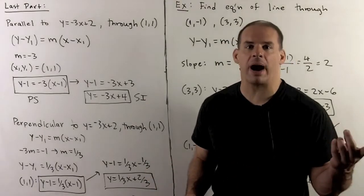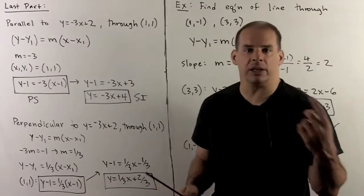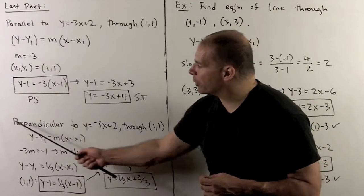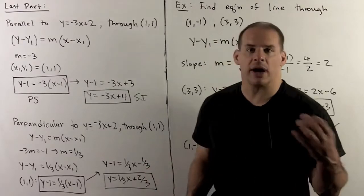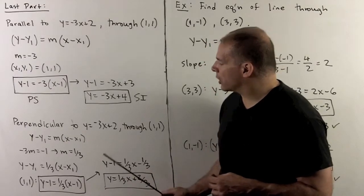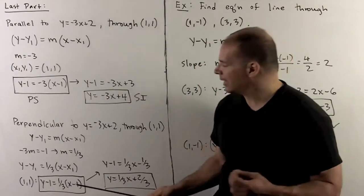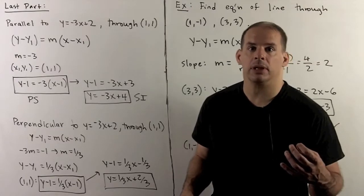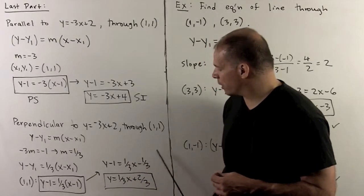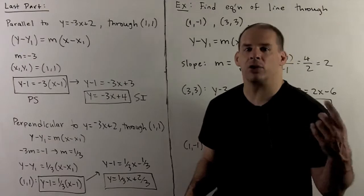Next, we have the same problem except using perpendicular instead of parallel. We can get the slope and we have a point, so we immediately write the point-slope form: y minus y1 equals m times the quantity x minus x1. For perpendicular lines, the original slope is minus 3, and the product of slopes must equal minus 1, so the new slope equals one-third. Using the point (1, 1), we get y minus 1 equals one-third times the quantity x minus 1. For slope-intercept form, we distribute the one-third to get one-third x minus one-third, then move the minus 1 to get y equals one-third x plus two-thirds. That agrees with our answer from last time.